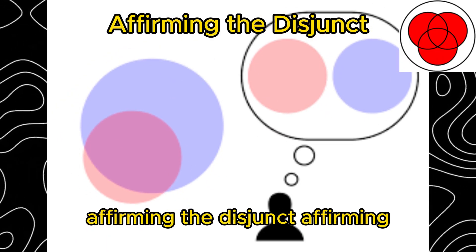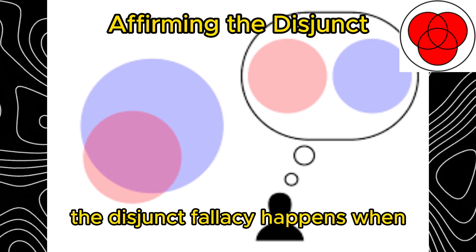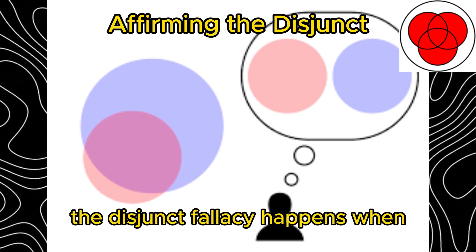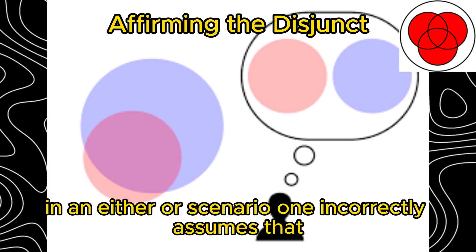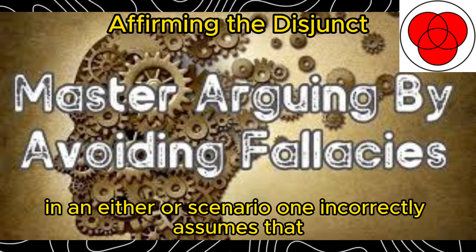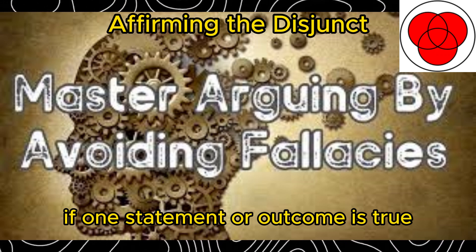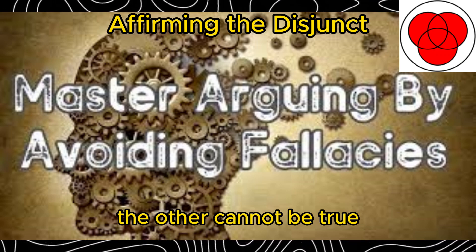Affirming the disjunct. Affirming the disjunct fallacy happens when, in an either-or scenario, one incorrectly assumes that if one statement or outcome is true, the other cannot be true.